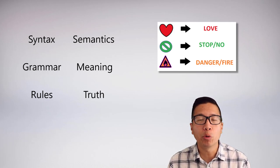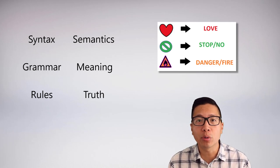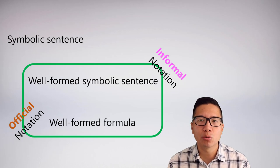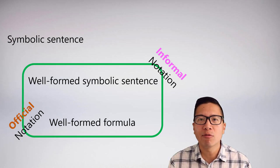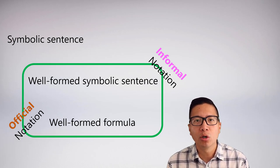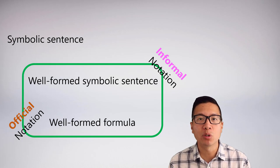In the semantics section, we padded out concepts of meaning and truth so we could bestow semantic properties. To be more precise, we looked at informal and official notation. Remember, everything in this course that can have meaning can't just be a random symbolic sentence.